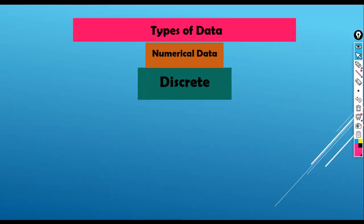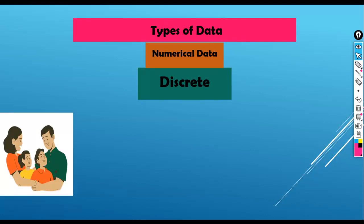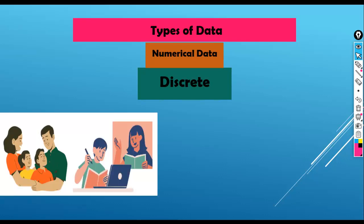Next, discrete data. Discrete data is a type of numerical data that can only take on specific distinct values. Some examples of discrete data include the number of children in a family, number of classes attended by a student. As I said, discrete data can only take on specific distinct values. Here you can see number of classes attended by a student: 30, 40, 50, etc. But all are distinct values.